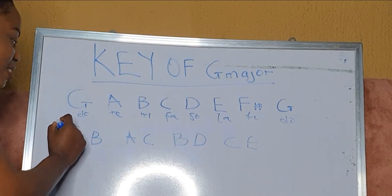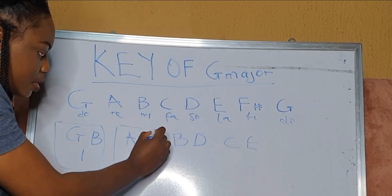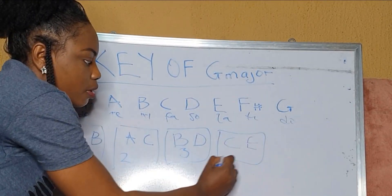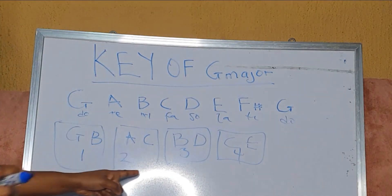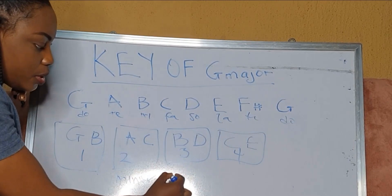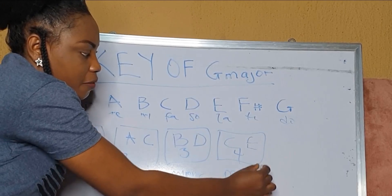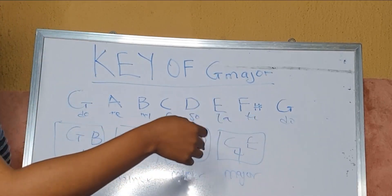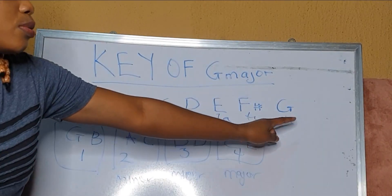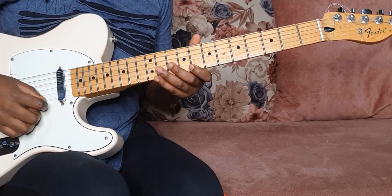This would be the first degree, second degree, third degree, fourth degree, and so on. The second degree is a minor third, the third is also a minor third, the fourth is a major third, the fifth is a major third, the sixth is a minor third, and the seventh is also a minor third.